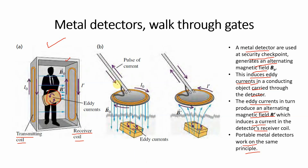Portable metal detector میں ایک transmitting coil ہے جس میں current flow ہونے سے changing magnetic field B₀ produce ہو رہا ہے۔ جب ہم کسی جگہ کو scan کریں گے اور اس جگہ کے نیچے کوئی metal کی چیز ہو — gold کے سکے ہو سکتے ہیں، اسلحہ ہو سکتا ہے — تو یہ changing magnetic field اس کے اندر eddy current produce کرے گا۔ Eddy current produce ہونے سے ایک اور magnetic field B' produce ہو جائے گا، main field میں change produce ہوگی اور detector اس change کو observe کر لے گا۔